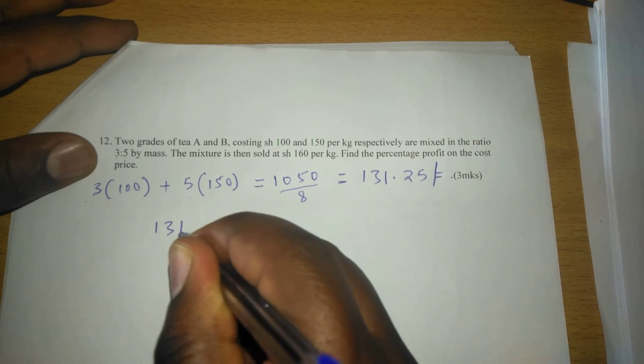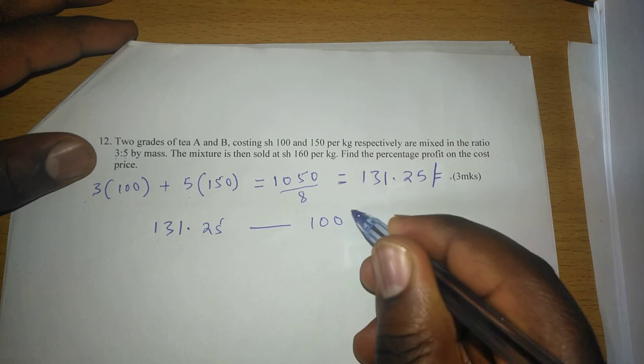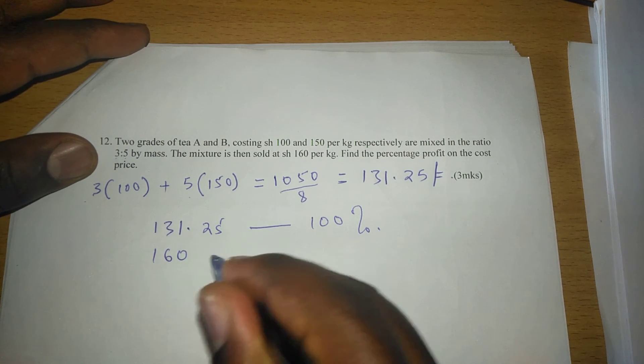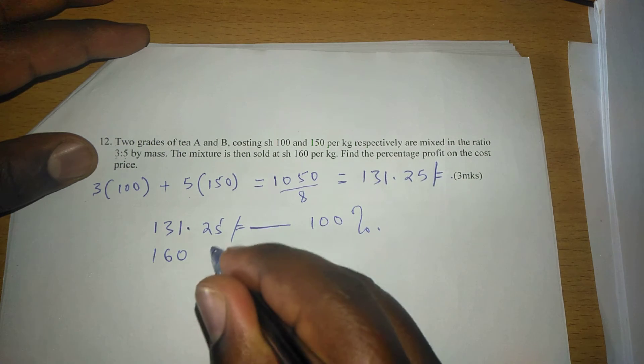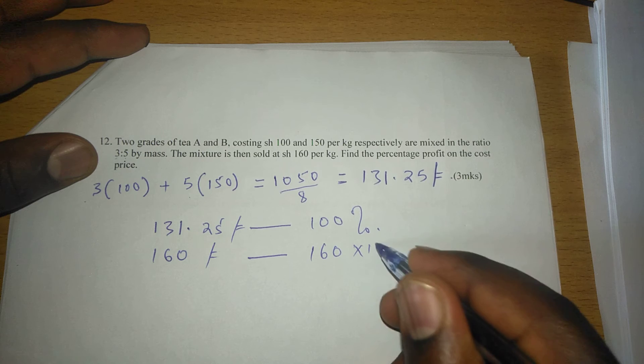We can get the percentage profit by saying 100 percent is the cost price. What about the selling price? The selling price is going to be 160 multiplied by 100 and we divide by 131.25.